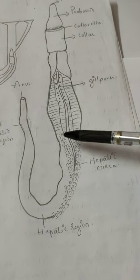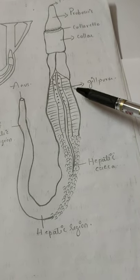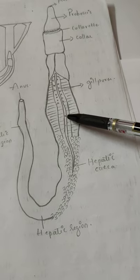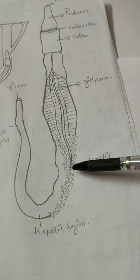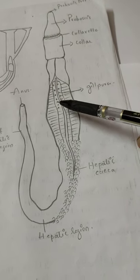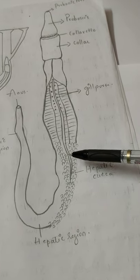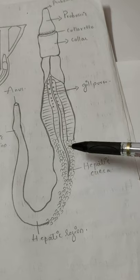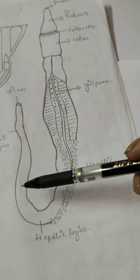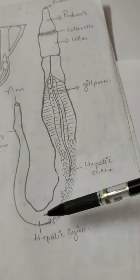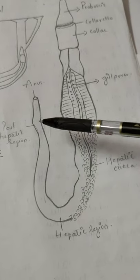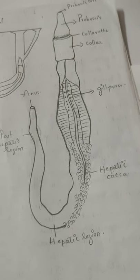The trunk is divided into three parts. The first is the branchogenital region with lateral genital wings housing the gonads, one mid-ventral and one mid-dorsal ridge, and gill pores at the sides of the ridge. Behind that is the hepatic region with the hepatic caeca. Behind that is the post-hepatic region — smooth, with no genital flaps, lateral prolongations, caeca, or ridges — ending in the anus.